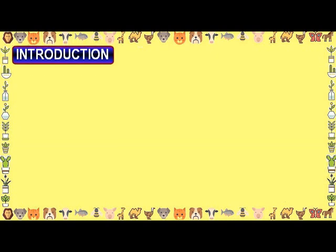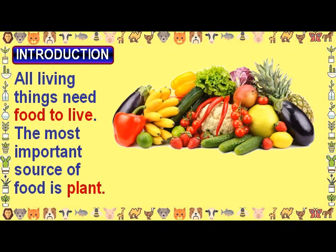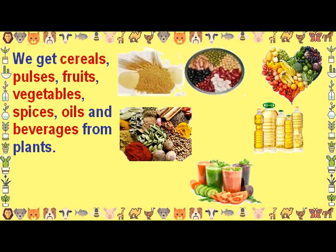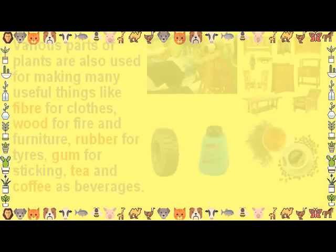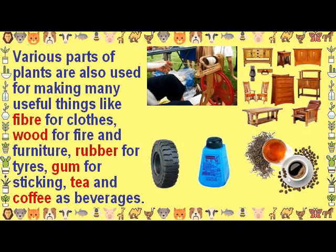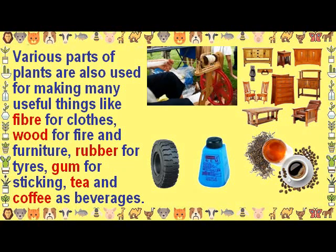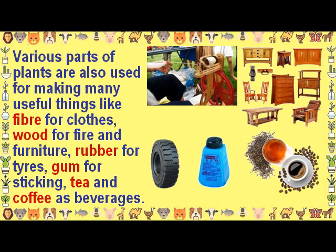Introduction. All living things need food to live. The most important source of food is plants. We get cereals, pulses, fruits, vegetables, spices, oils and beverages from plants. Various parts of plants are also used for making many useful things like fiber for clothes, wood for fire and furniture, rubber for tires, gum for sticking, and tea and coffee as beverages.